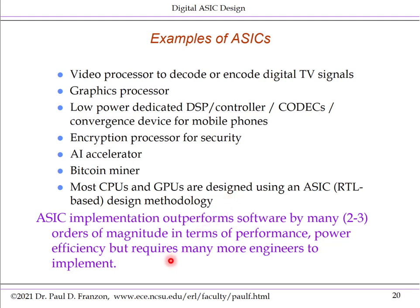In general, a hardware implementation of a particular function outperforms a software implementation on a general-purpose processor by many orders of magnitude in terms of performance and power. But it does require a lot of engineering talent to design an ASIC, whereas writing software is a much more common skill and cheaper to execute.